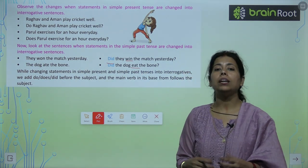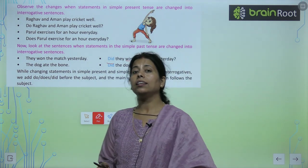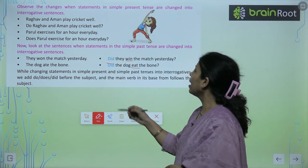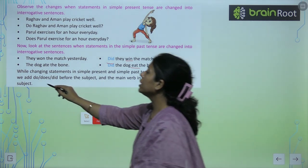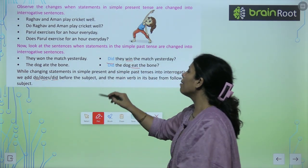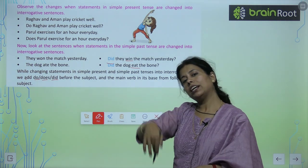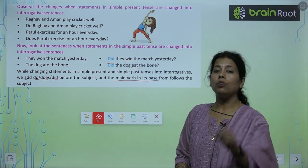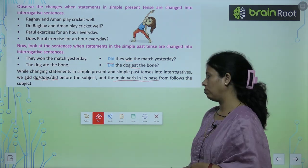While changing the statement — डिड पहले लगा दिया, verb जो है पहले आ गया है। हमने do, does, या did add कर दिया subject से पहले, and the main verb changes to its base form — that is, the first form. Subject के पहले हमने लगा दिया, और जो verb है उसकी base form — first form — आती है।